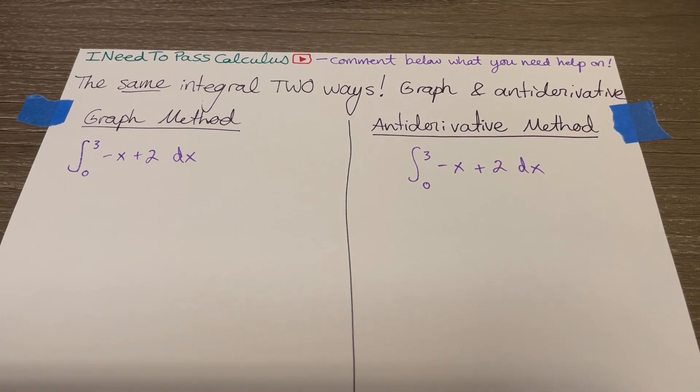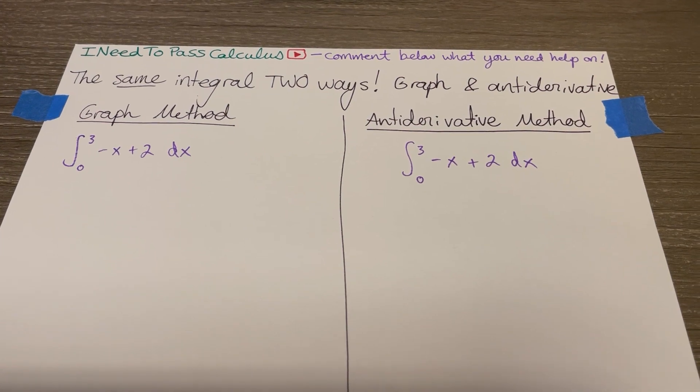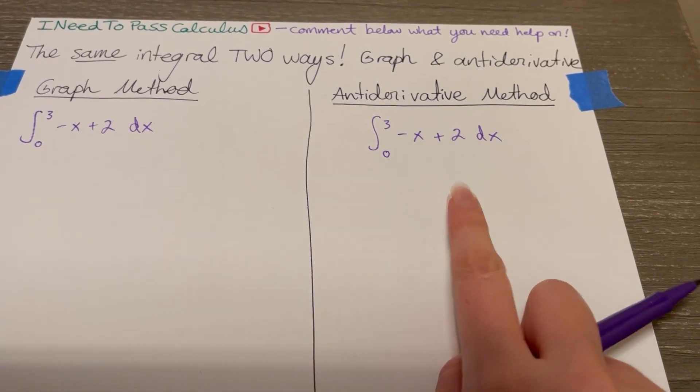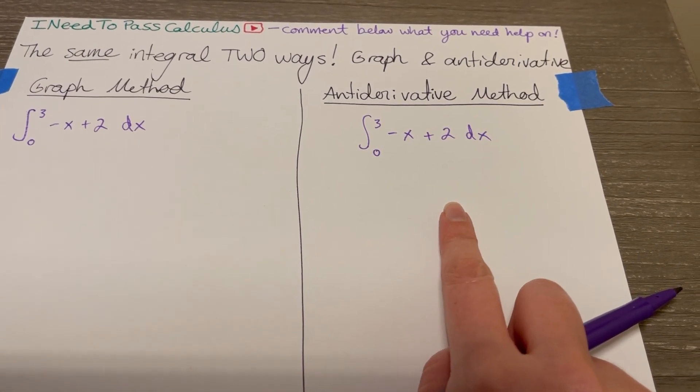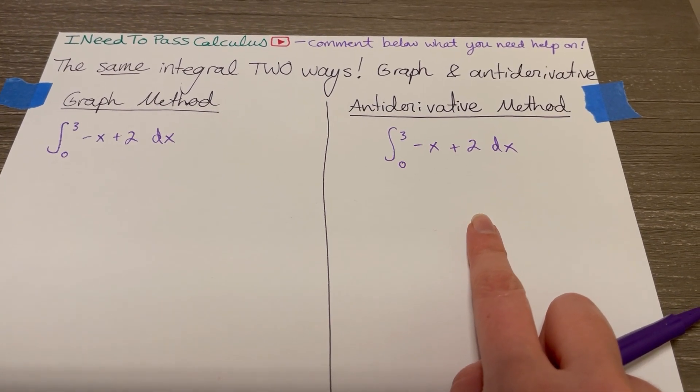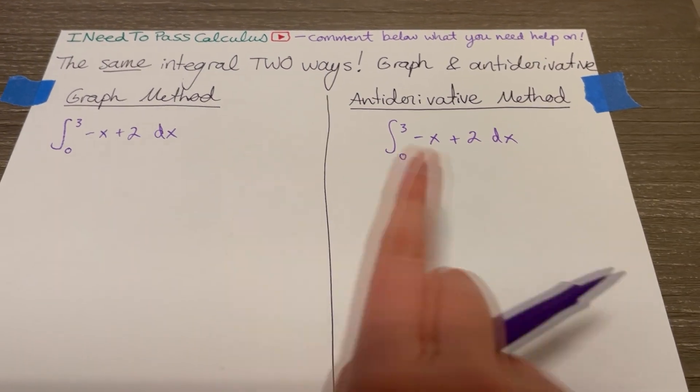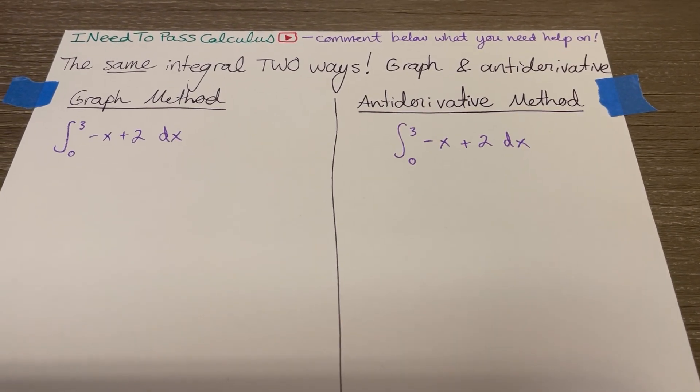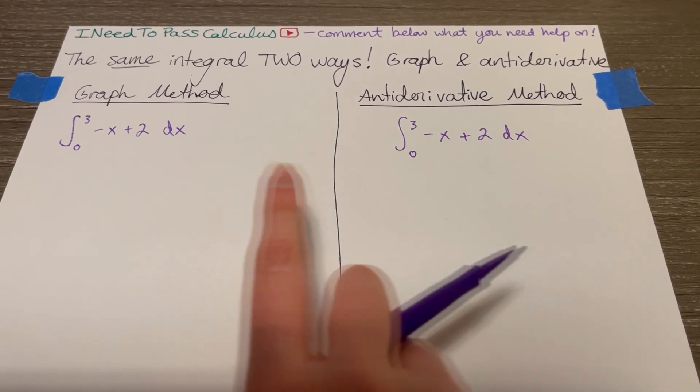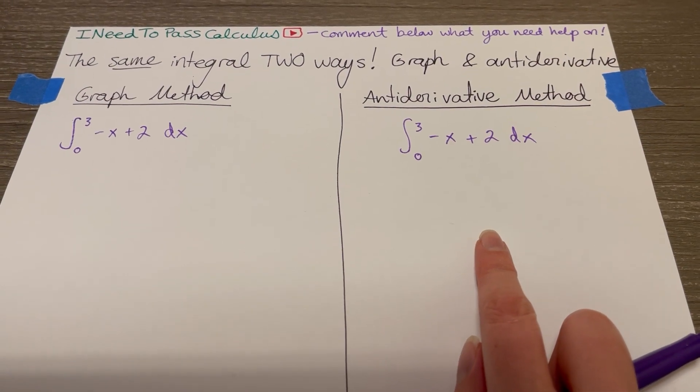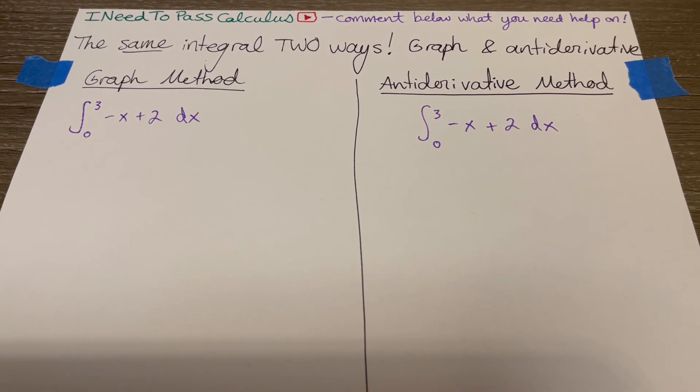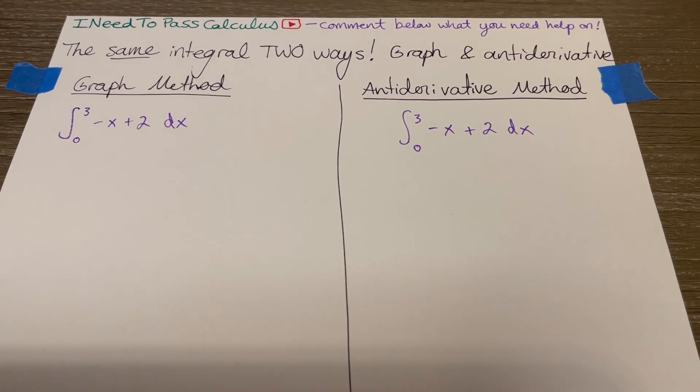Welcome back my calculus adventurers. Today we're going to do the exact same definite integral in two ways, using a graph and geometry and using a classic antiderivative, using the fundamental theorem of calculus, evaluating the antiderivative. I think it's so beautiful that you can do the exact same problem in two completely different ways. Some integrals are much easier using the graph method, others are much easier using antiderivatives. Most problems will use the antiderivative method, but here's an example of a problem that's about equally easy either way, so let's check it out.